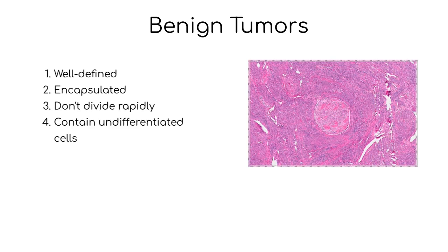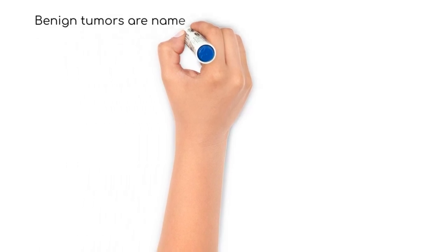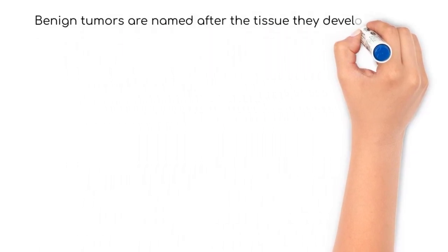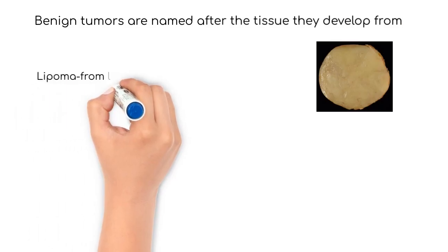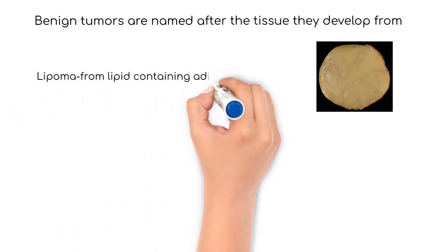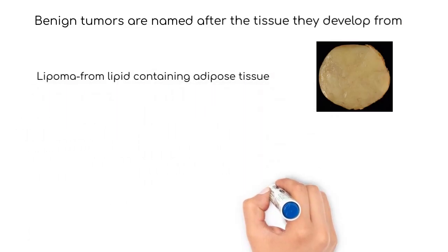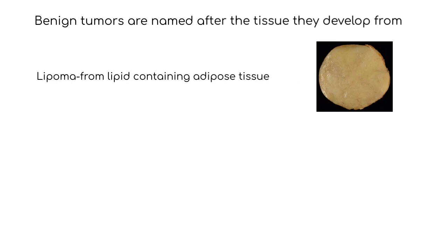Benign tumors also have tissue that is more regular or undifferentiated. Benign tumors are named after the tissue from which they develop. An example of a benign tumor is a lipoma, which develops from adipose, or lipid-containing tissue.